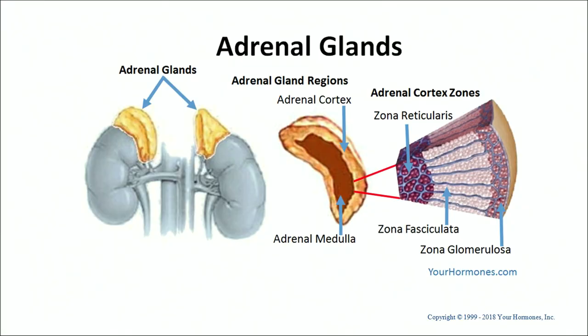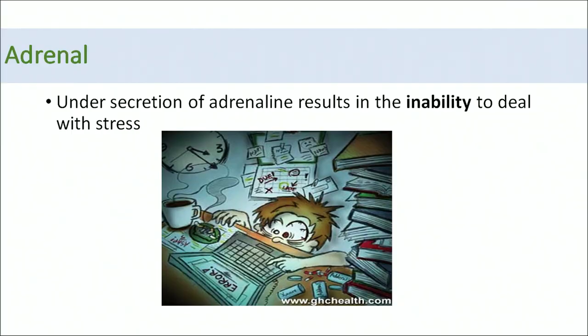The adrenal gland contains two parts: the adrenal cortex and the adrenal medulla. Under-secretion of adrenaline means you are unable to deal with stress. If you have a heavy workload, you cannot perform well due to under-secretion of the adrenaline hormone.